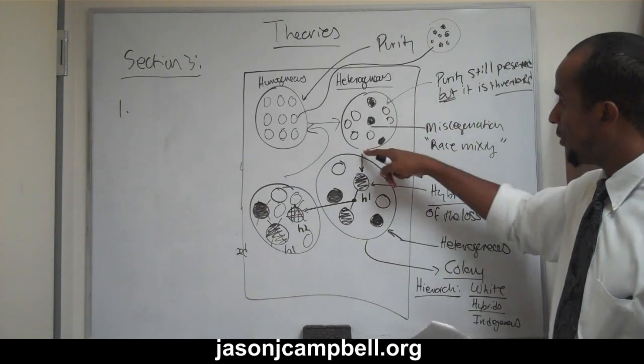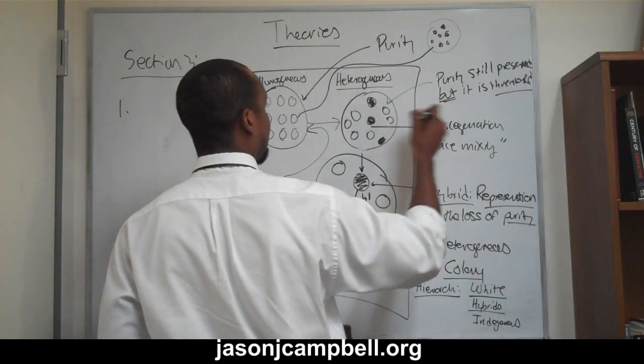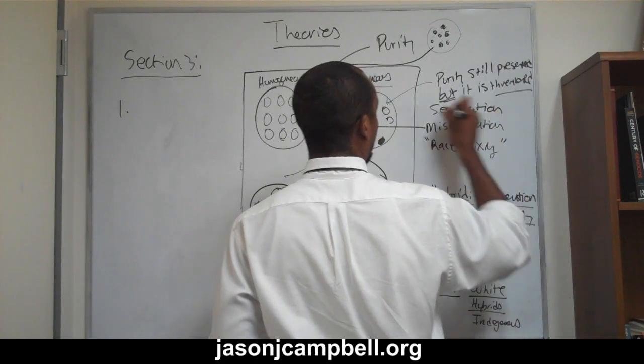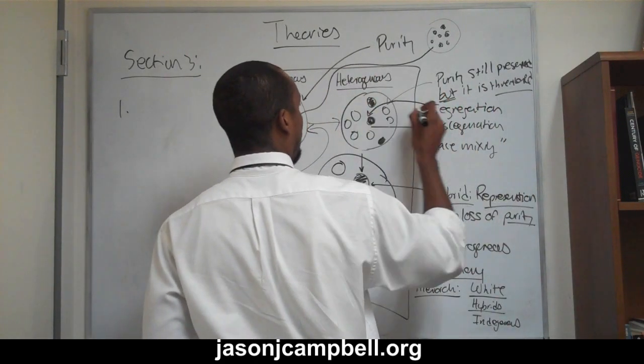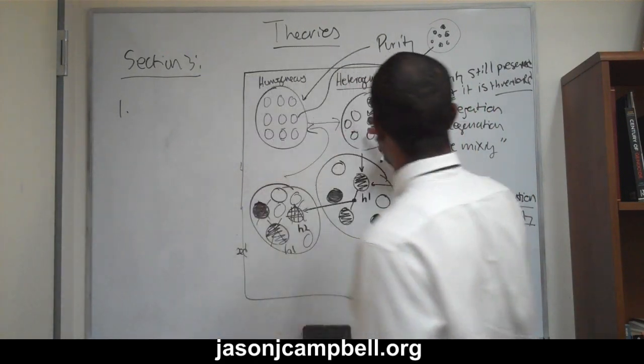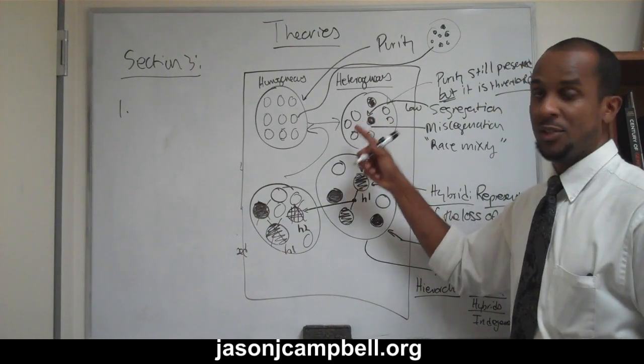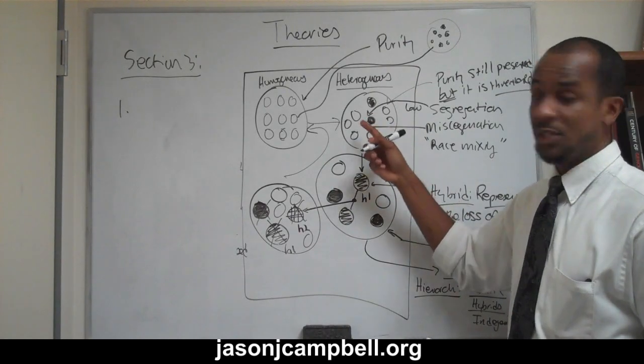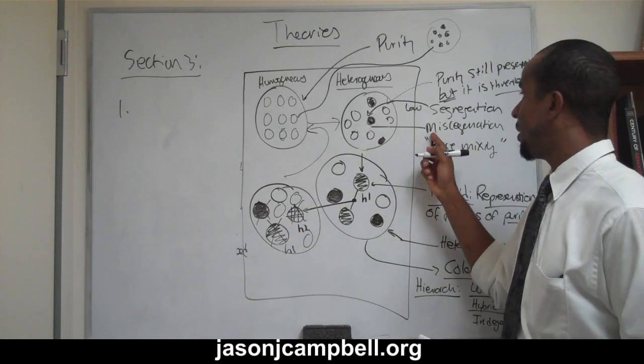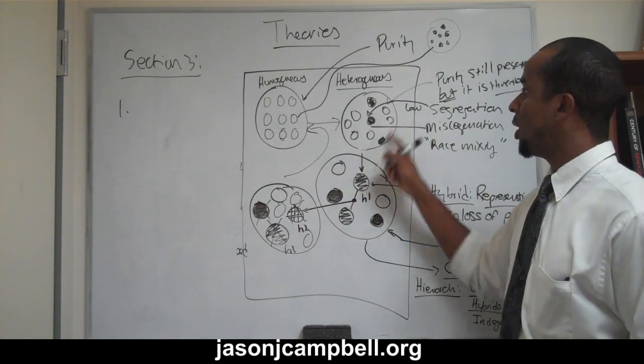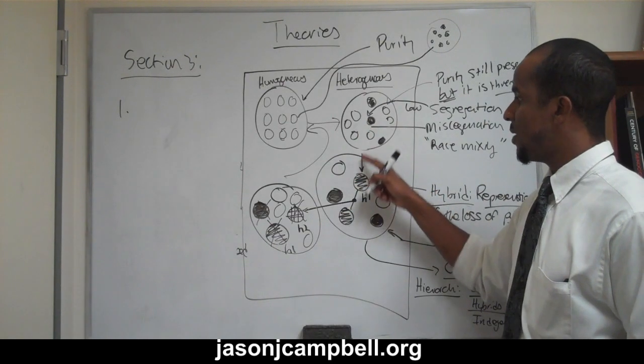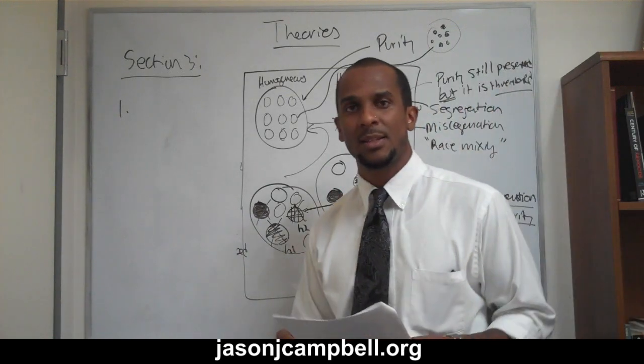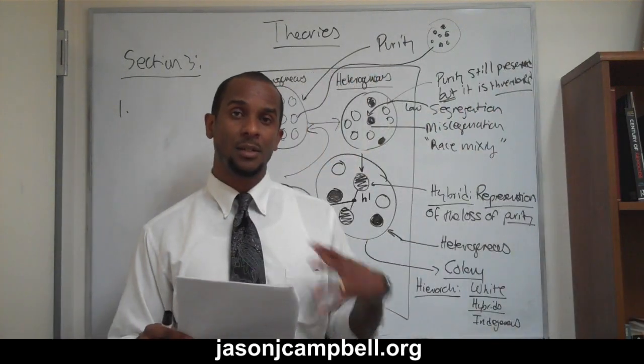So what we end up doing in the state of affairs is that we implement segregation. So we implement through law, we implement segregation in this state of affairs to prevent the cohabitation, or not the cohabitation but the miscegenation, to prevent the miscegenation of blacks with whites and thus prevent this state of affairs. So segregation is used as a tool of preserving purity.